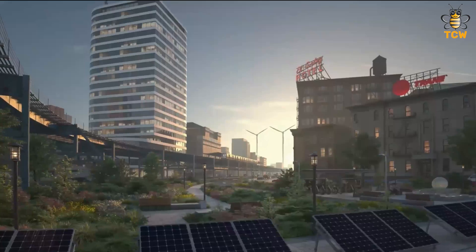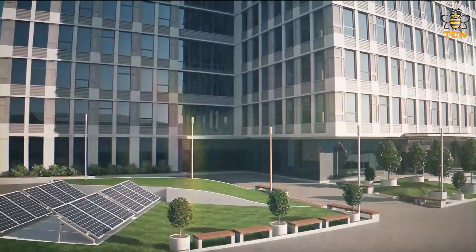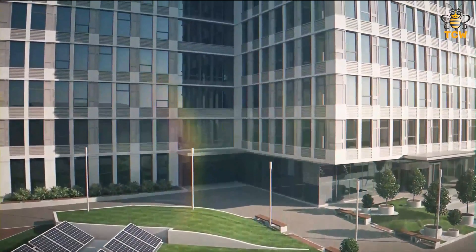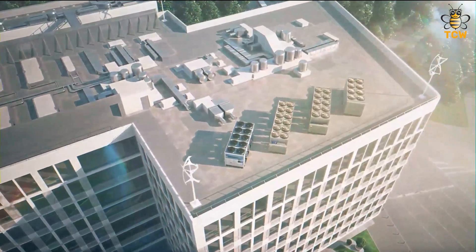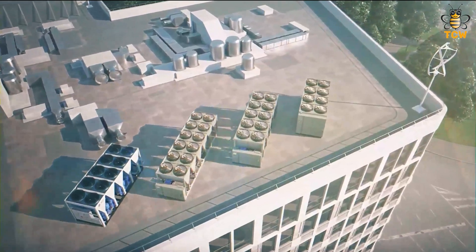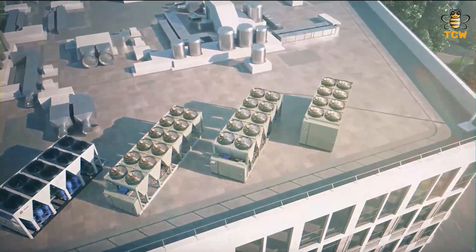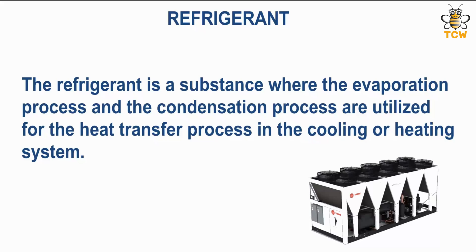In the world of air conditioning, there are two types of chillers used: water-cooled chiller and air-cooled chiller. The difference is the fluid used to release heat in the condenser, where the water-cooled chiller uses water and the air-cooled chiller uses air. Air-cooled chiller removes heat from the chilled water using outdoor air directly, and is usually placed at the top of the building. The refrigerant is a substance where the evaporation and condensation processes are utilized for heat transfer in the cooling or heating system.